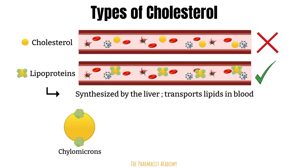The first type is the chylomicron, which is composed of mostly triglycerides and very little protein — over 90% of it is triglycerides. Chylomicrons carry triglycerides from the intestines to the liver, to skeletal muscles, and to adipose tissue. Next, we have the VLDL or very low density lipoprotein, which is also triglyceride rich. VLDL carries newly synthesized triglycerides from the liver to adipose tissues.